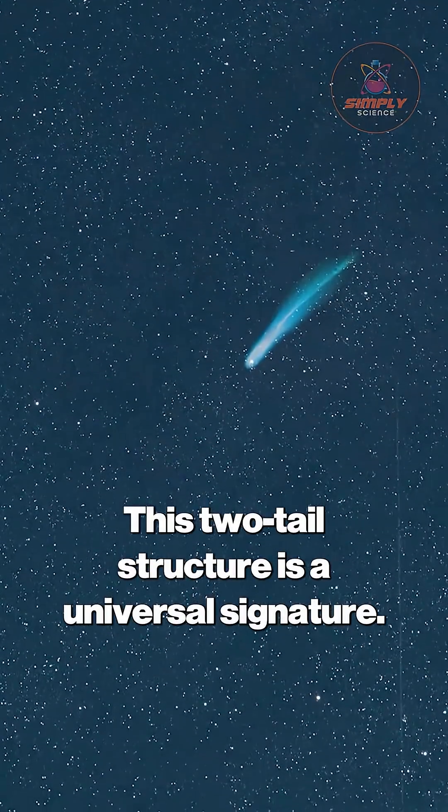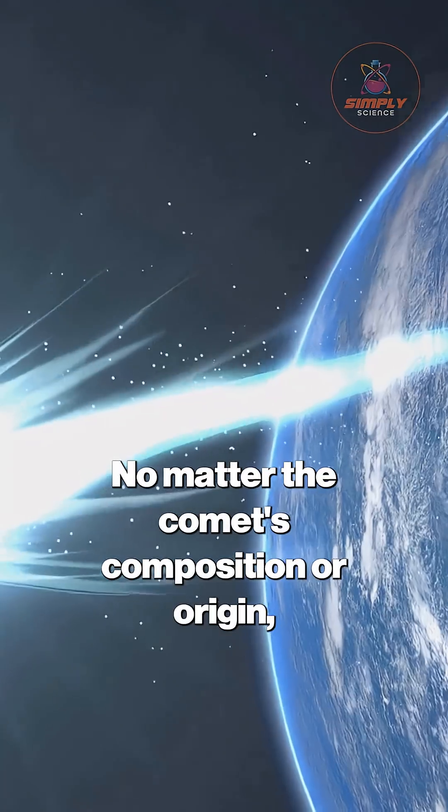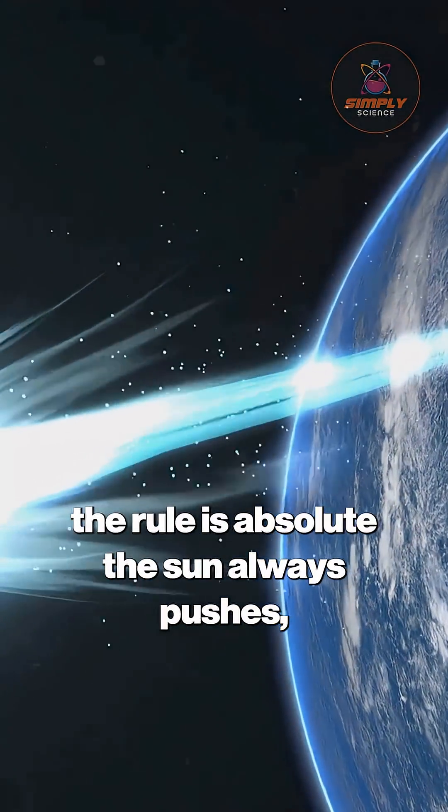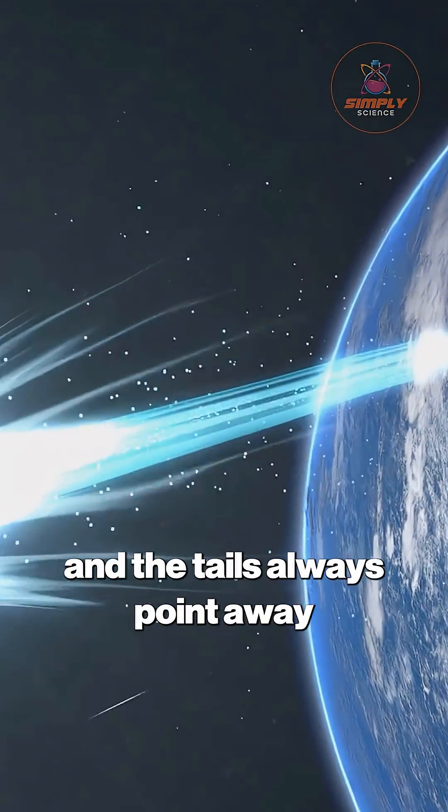This two-tail structure is a universal signature. No matter the comet's composition or origin, the rule is absolute. The sun always pushes, and the tails always point away.